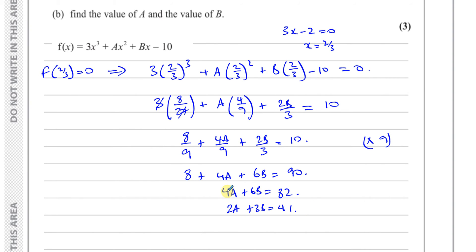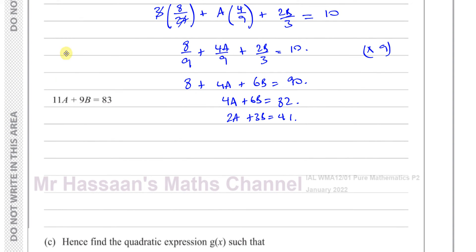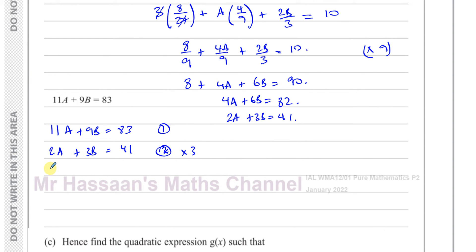We now have equation 1 from part a: 11a plus 9b equals 83, and the new equation 3: 2a plus 3b equals 41. Multiplying equation 3 by 3 gives 6a plus 9b equals 123. Subtracting this from equation 1 — that is equation 1 minus equation 3 — gives 11a minus 6a equals 5a, the 9b terms cancel, and 83 minus 123 equals negative 40. So 5a equals negative 40.